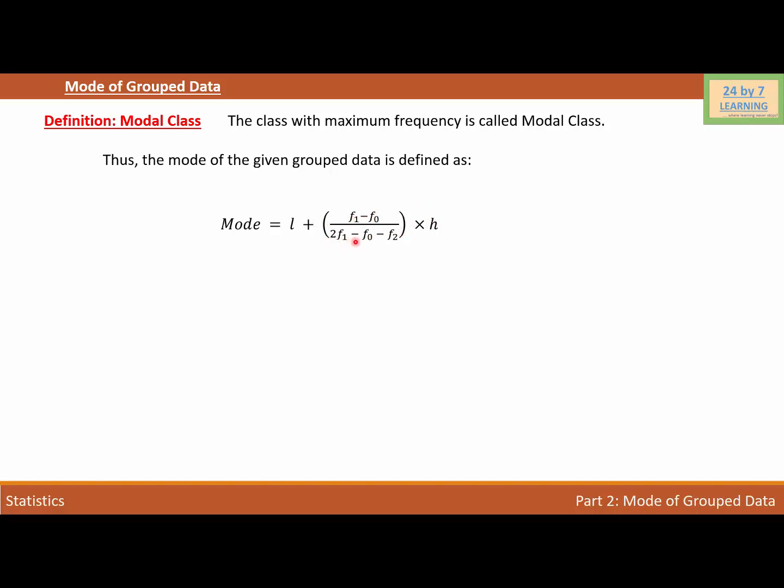H is the size of the class interval, f1 is the frequency of the modal class, f0 is the frequency of the class preceding the modal class, and f2 is the frequency of the class succeeding the modal class.